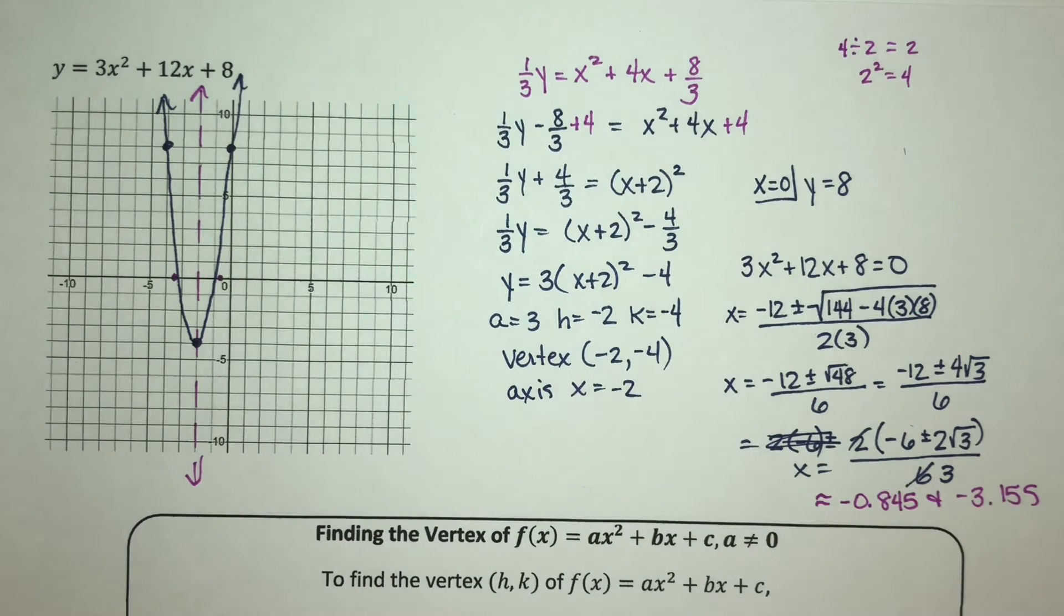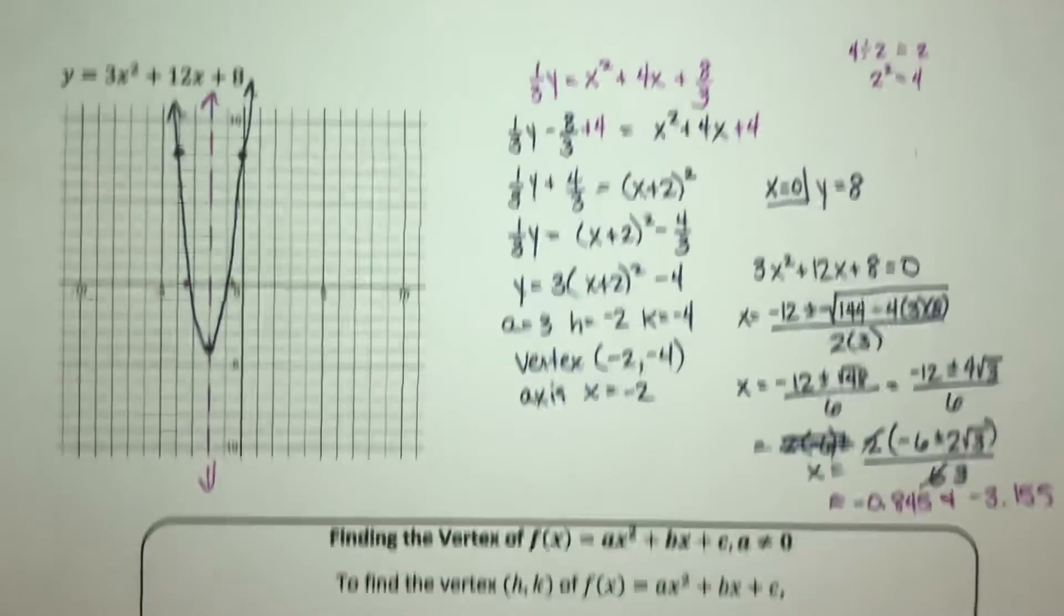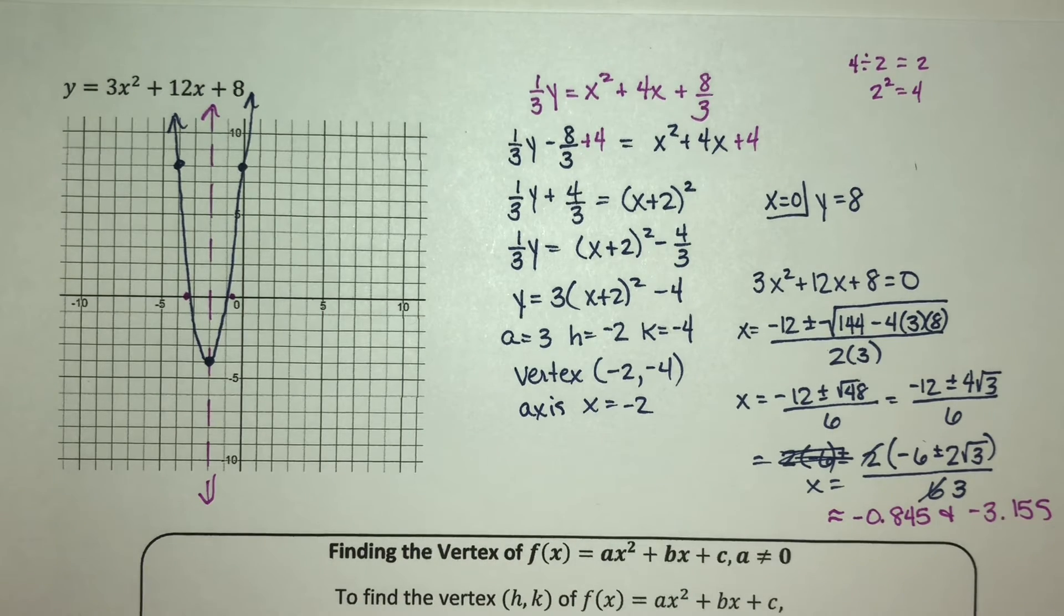Now, why did we go through all of this on two problems with completing the square? One, it's mainly so that you know what's actually happening here, so that you can appreciate the formula we are about to give you. But also because it is important that you recognize that this can be used. There are certain types of problems in math where really your only good option is to go to completing the square. And so anytime we can bring it up and show you how it's being used in the background, the better off you're going to be in the long run. But you're probably right. You're probably thinking there has to be an easier way. And there is.